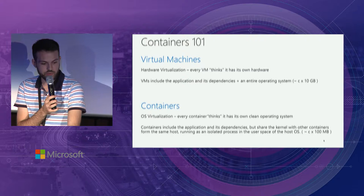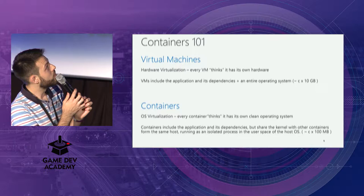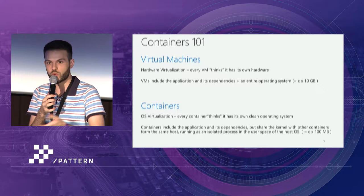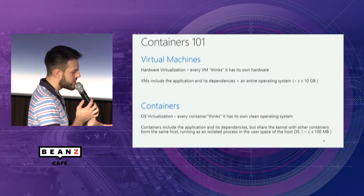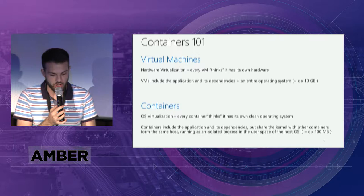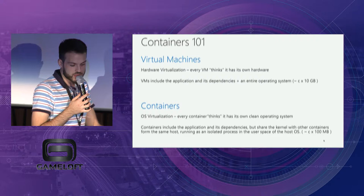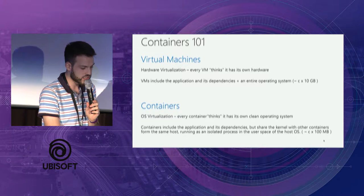The idea behind containers — and I see extremely often that a container is described as a lightweight virtual machine, which is not exactly accurate. A virtual machine is hardware virtualization, where each VM thinks it has its own infrastructure, its own RAM, its own CPU. A container is operating system virtualization — every container thinks it has its own clean operating system. A virtual machine is around 10–15 gigabytes in size, while a container can start from five megabytes to a couple of hundreds of megabytes, depending on what's inside.